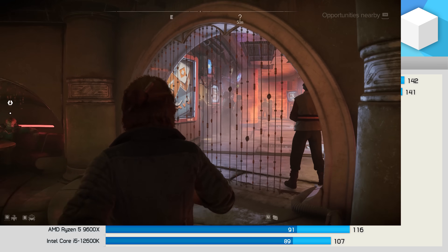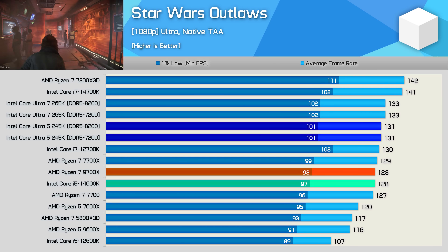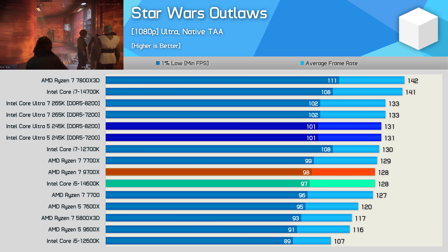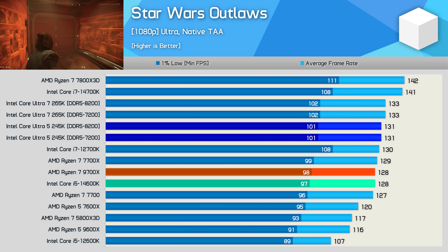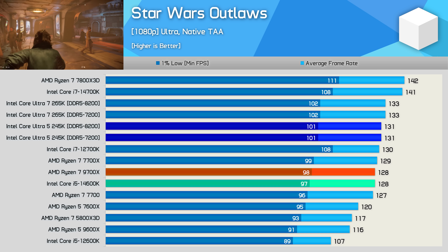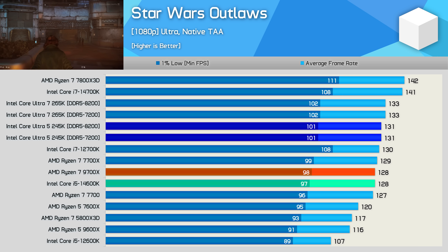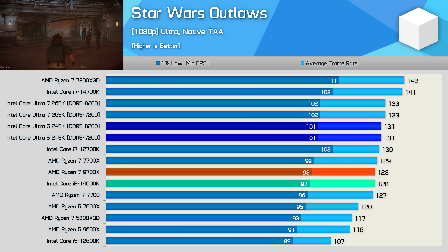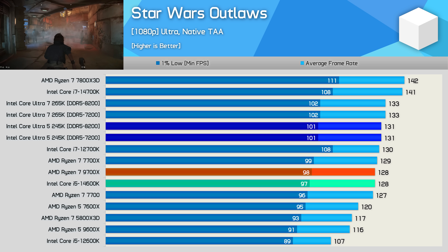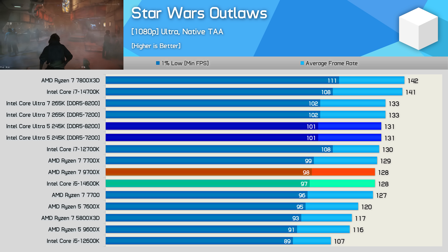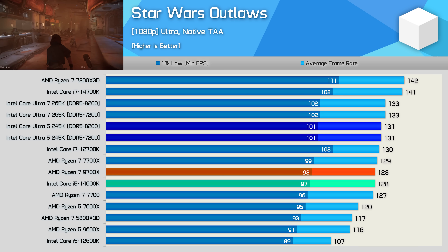Star Wars Outlaws results are okay — really the worst result you would have hoped to see from the 245K. It shows a 2% performance uplift over the 14600K, which isn't amazing, but at least it is faster.